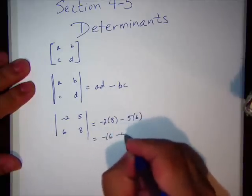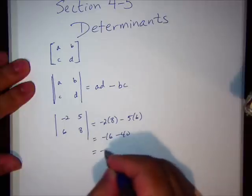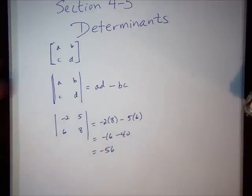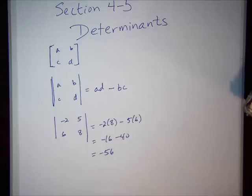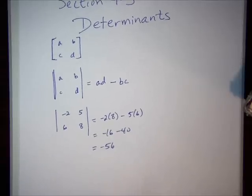This is called the second order determinant. Basically, you find a determinant of a 2 by 2 matrix. One thing to note, you can only find determinants of square matrices. A matrix must be square in order to find a determinant. Let's do a third order determinant. We're going to find a determinant of a 3 by 3 matrix.